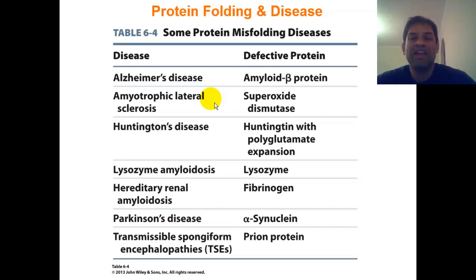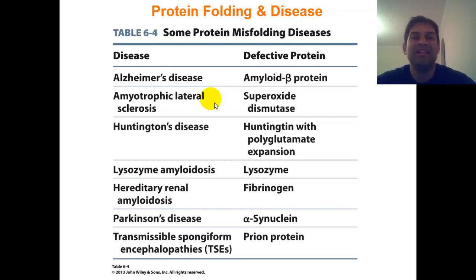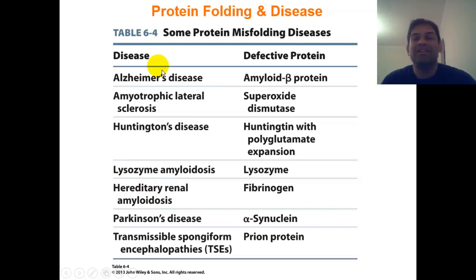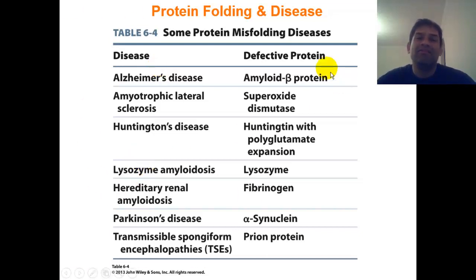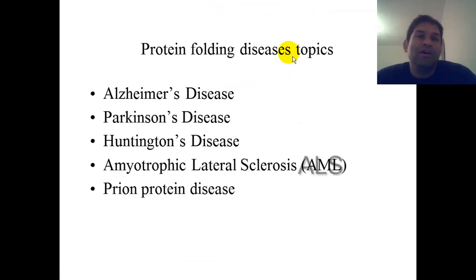When a protein misfolds, it doesn't perform its proper function—but it's even worse when it starts to aggregate. When it aggregates, that's when we tend to see a lot of the pathology. We should note that each of these diseases could cover an entire lecture or course. We're only going to dedicate one or two, at most three slides to each of these diseases, which have had decades of research poured into them—so it's very superficial. The underlying theme is that all of these diseases involve a protein that is misfolded in one way or another.